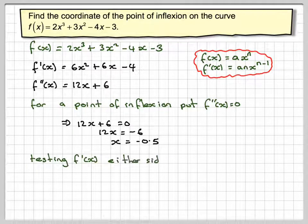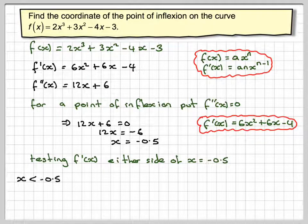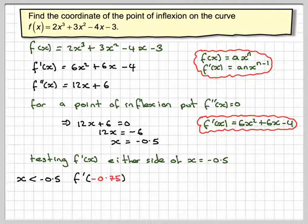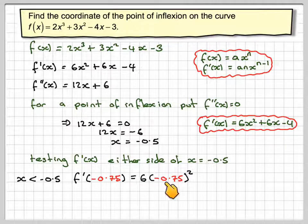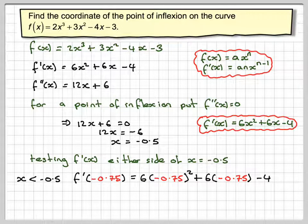For a point of inflection, the second derivative f''(x) = 0. So we set 12x + 6 = 0, giving 12x = −6, so x = −0.5. We're going to test what the gradient is either side of this point using the first derivative — testing just before and just after. When x < −0.5, we test f'(−0.75) = 6(−0.75)² + 6(−0.75) − 4. When we work that out on a calculator, we find it's negative, because we knew the gradient just before it was negative.